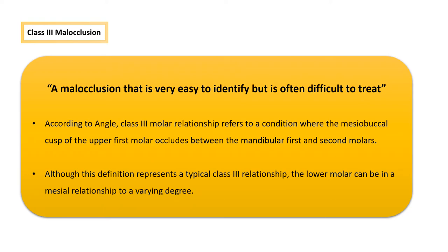Class 3 is one of the least common types of malocclusion you will come across, and it is prevalent in five percent of all cases exhibiting malocclusion. According to Angle, Class 3 molar relationship refers to a condition where the mesio-buccal cusp of the upper first molar occludes between the mandibular first and second molars. The lower molar can be in varying relationships with the upper molar.